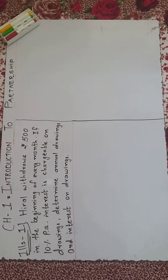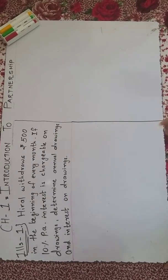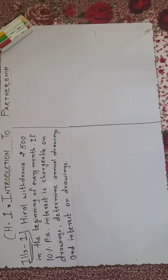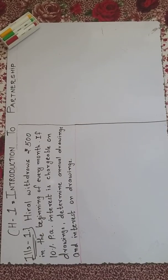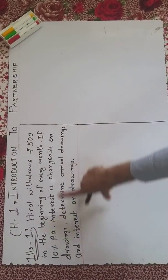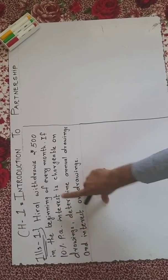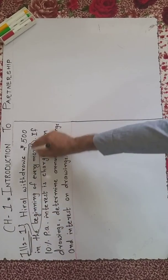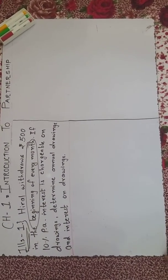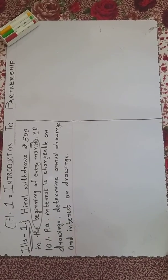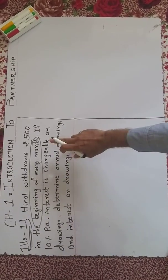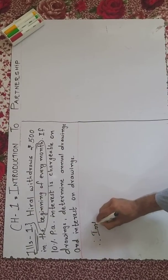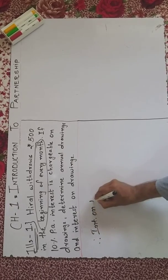When a partner takes anything from the business for personal use, it's called a drawing. Whenever there is a drawing, the partner has to give interest. The partner has to pay interest at the decided rate. In this case, interest is chargeable at 10% at the beginning of every month - meaning on the first day of every month. You have to find out interest on drawing.